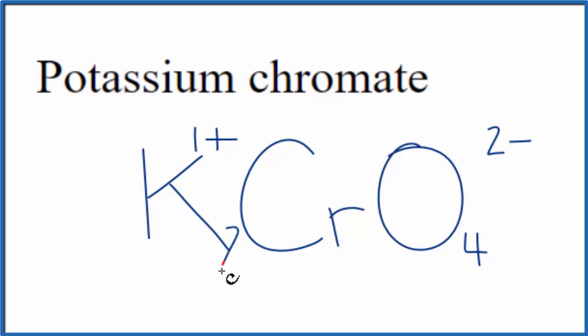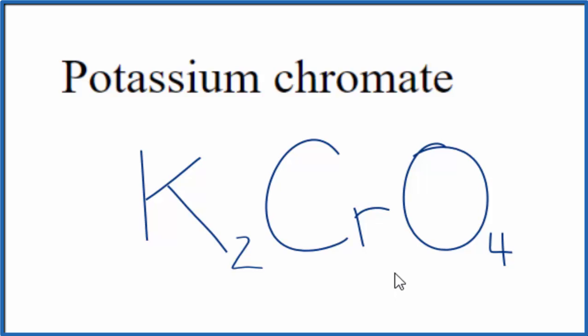We could put a subscript of 2 on the potassium. 2 times 1+, that's 2+, and 2-, that adds up to 0. Net charge is 0. So this is the formula for potassium chromate, K2CrO4.